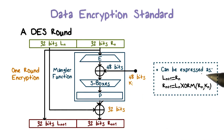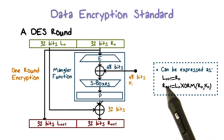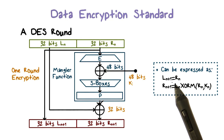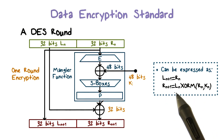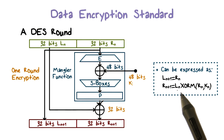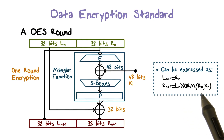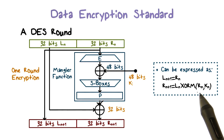We can also use algebra to represent the operations in a DES round. The left half of the output is the right half of the input, and the right half of the output is the result of XORing the left half of the input and the result of the Mangler function, which takes as input the right half of the input and the per-round key.